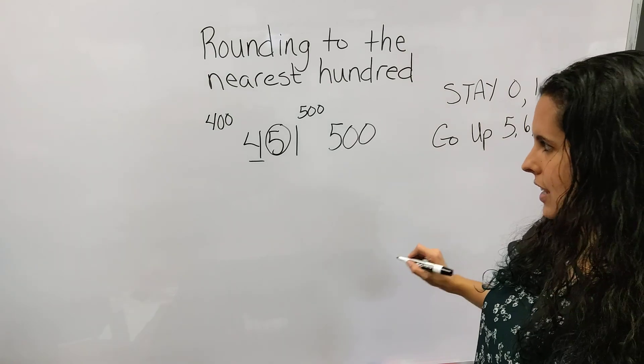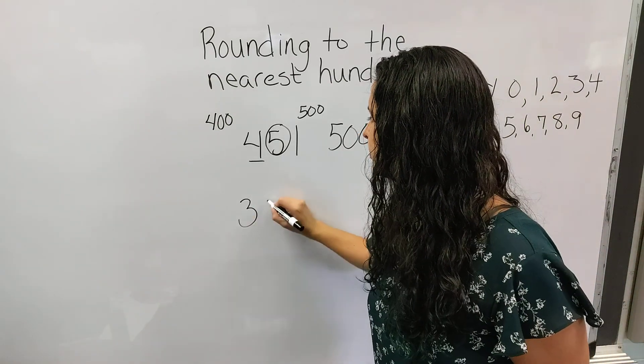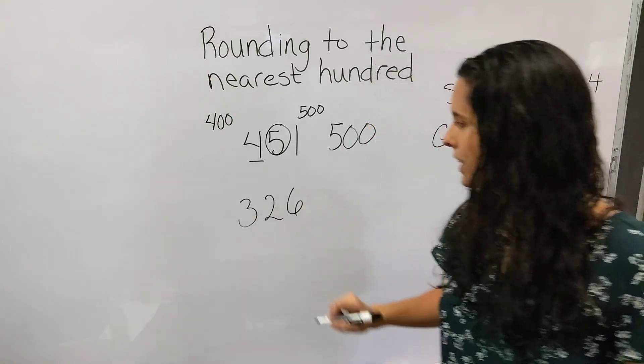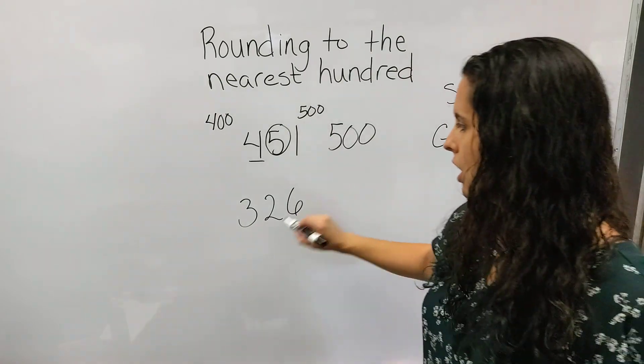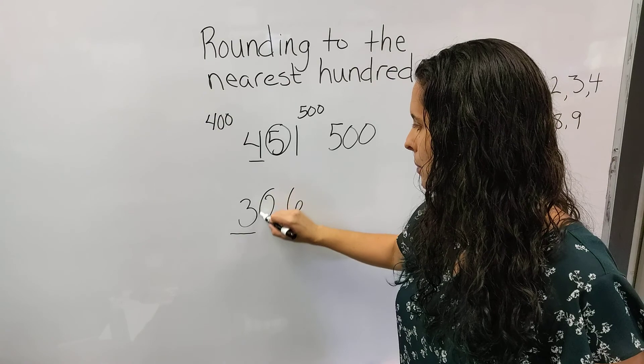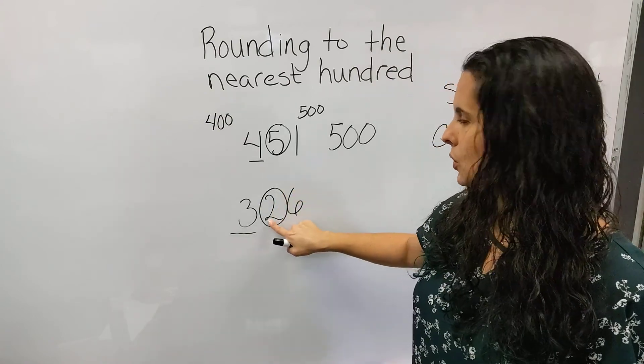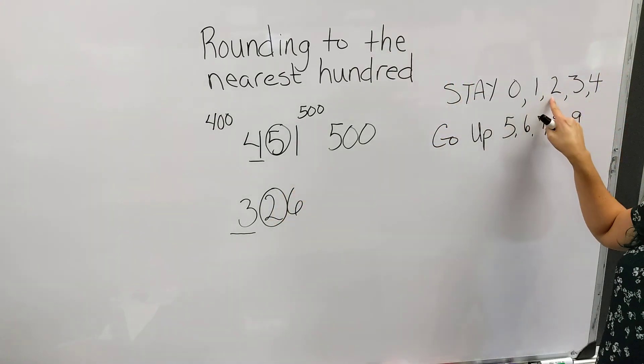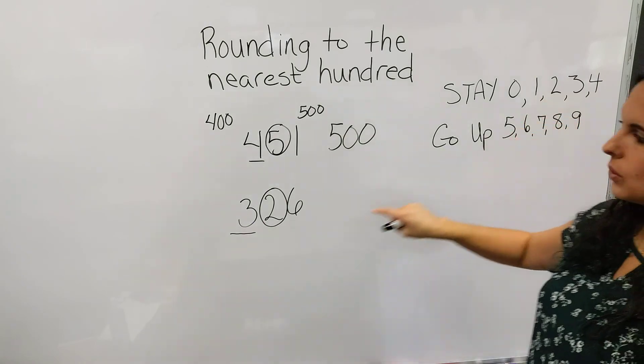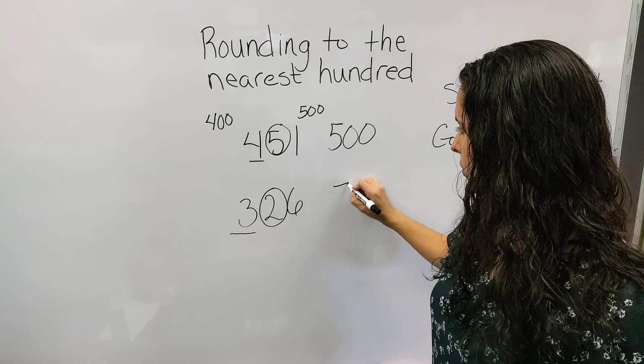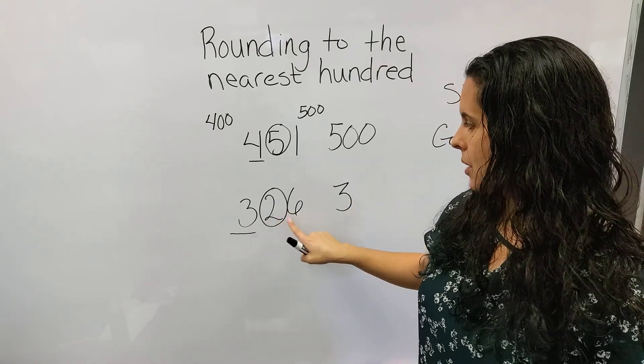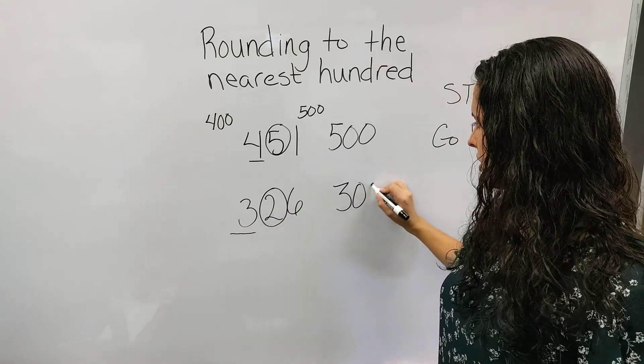Let's do another example. 326. So since we're rounding to the nearest hundreds, we'd underline the hundreds place. We circle the number behind it. It's a 2. If we check our rounding rules, 2 says it stays. So it's going to tell the 3, stay a 3. So we write 3. And these numbers here, they go to zeros.